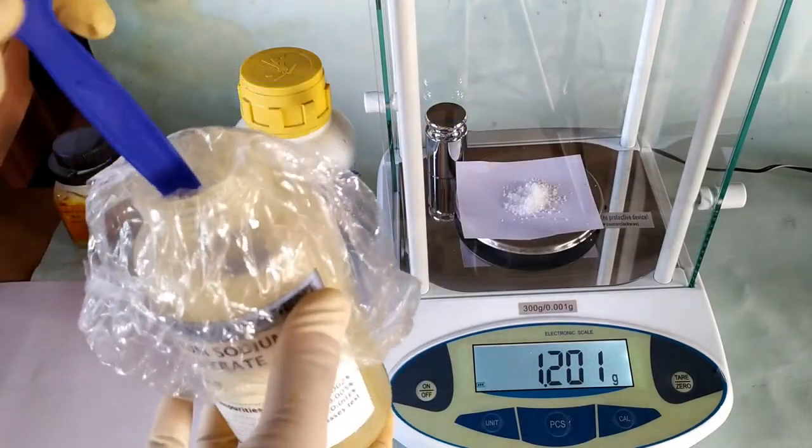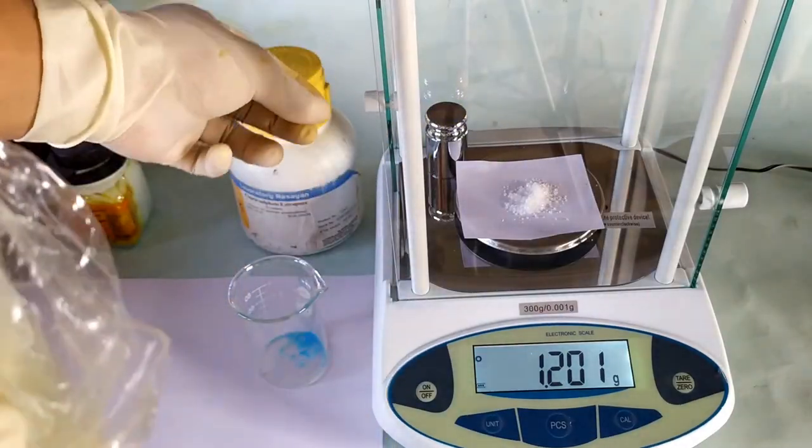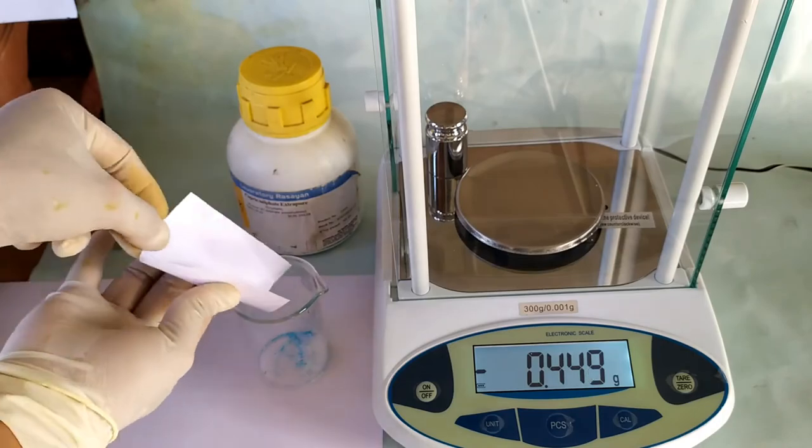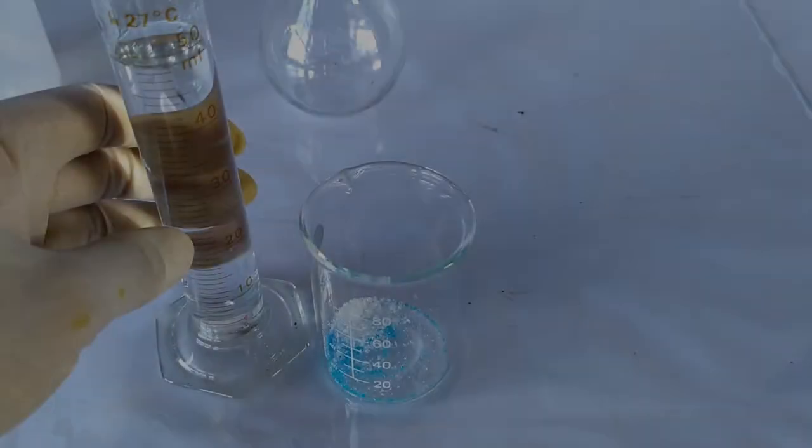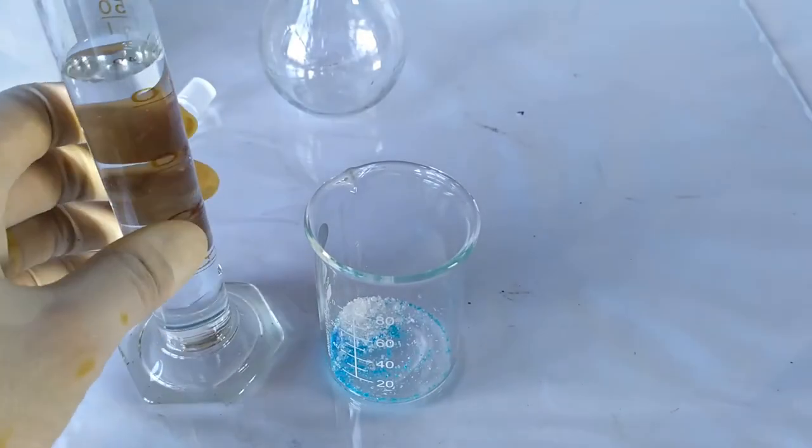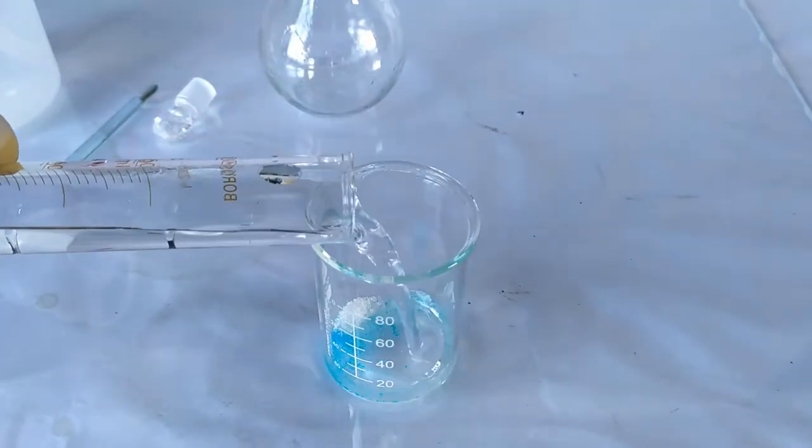Also weigh exactly 1.2 g of sodium potassium tartrate and transfer it into the same beaker. Now add about 50 ml of distilled water to the beaker and stir to completely dissolve the salts.